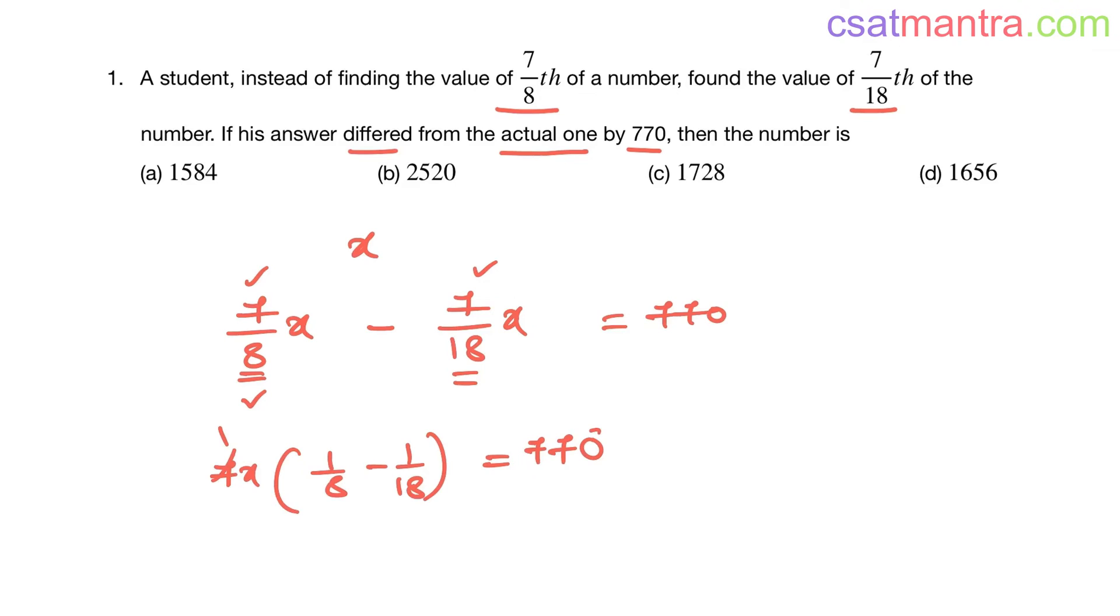Seven ones are seven elevens. So 18 minus 8 by 8 into 18, my friends, this is equal to 110. Now 18 minus 8 is 10. Now 8 into 18, this is equal to 110.